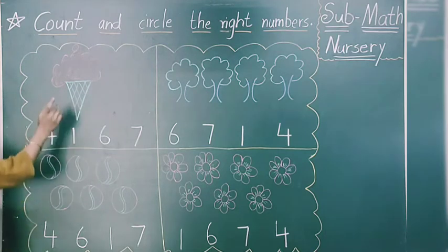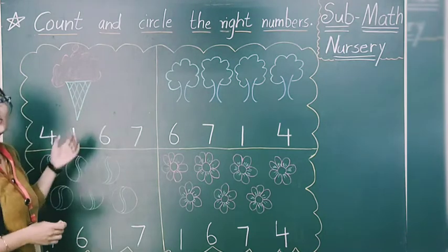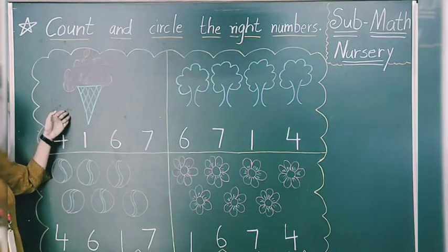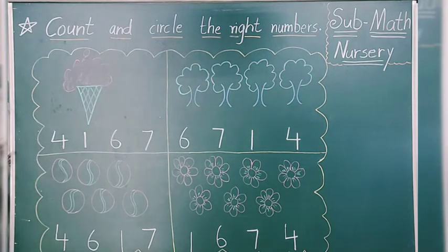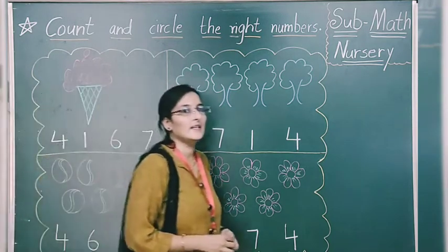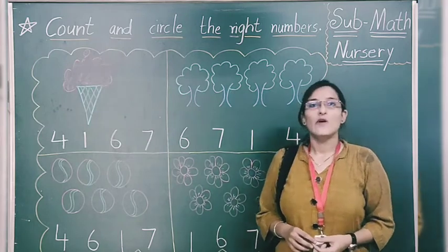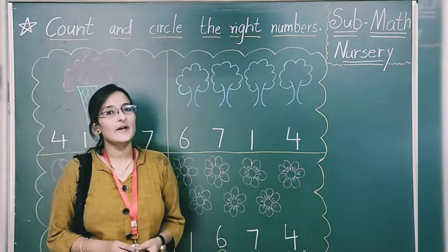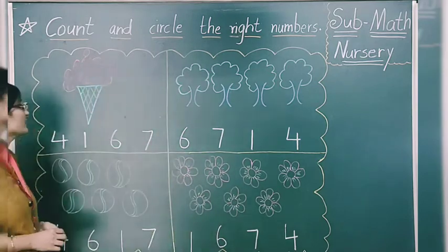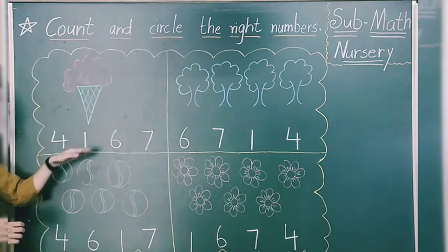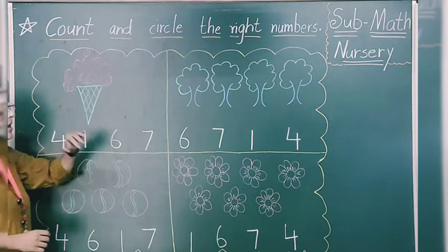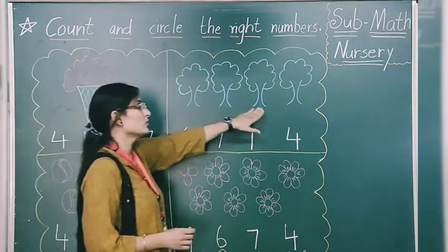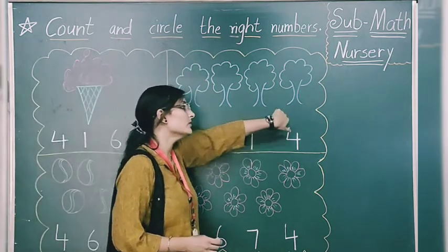Each and every drawing is drawn on this — you can see over here. What is this? An ice cream. Count it — how many? First we have to do counting and then we have to do circles. Here, what are drawn? 3. First we have to do counting, then we have to do circles. Got it?